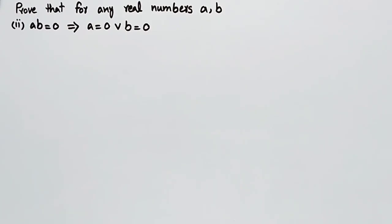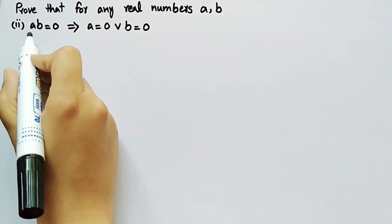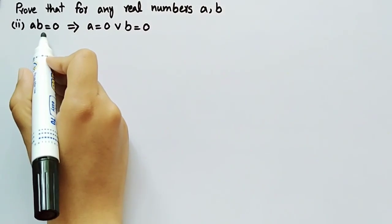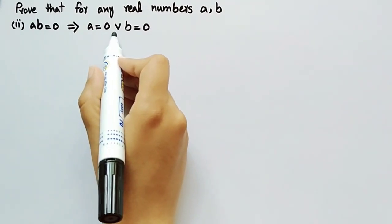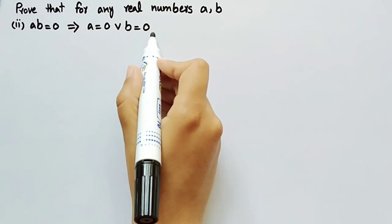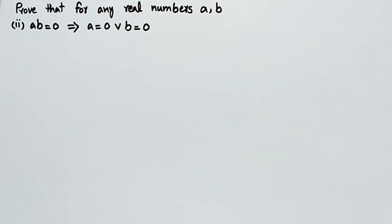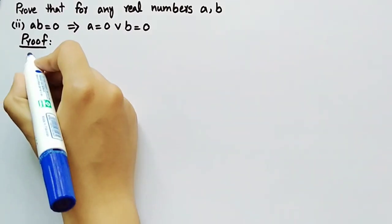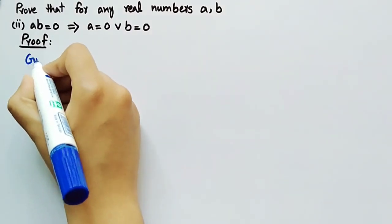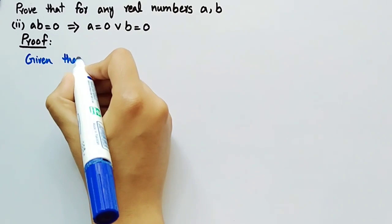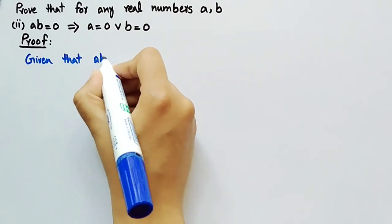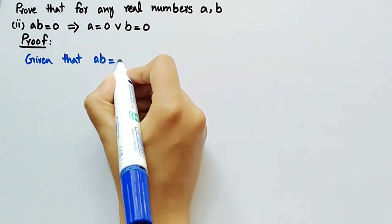Now, we will prove that the product a·b equal to 0 implies that a is equal to 0 or b is equal to 0. Coming towards its proof, it is given that the product a·b is equal to 0.